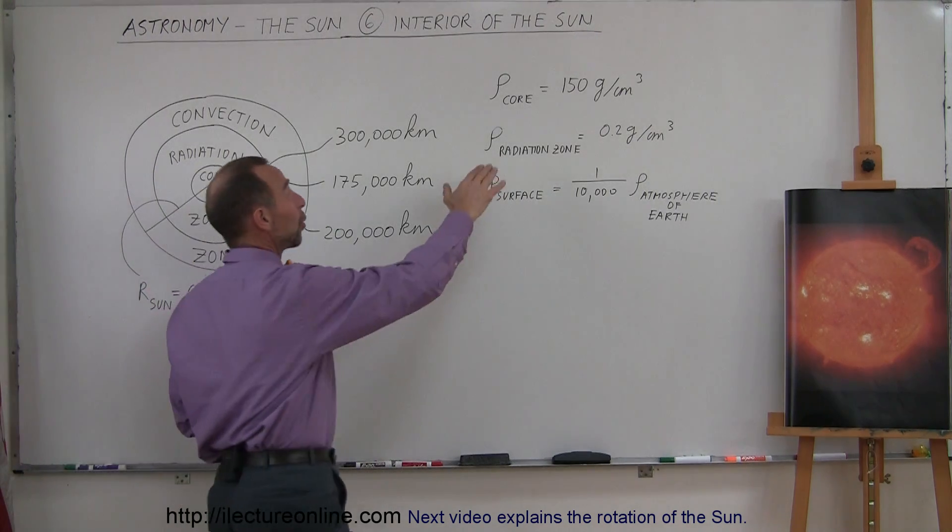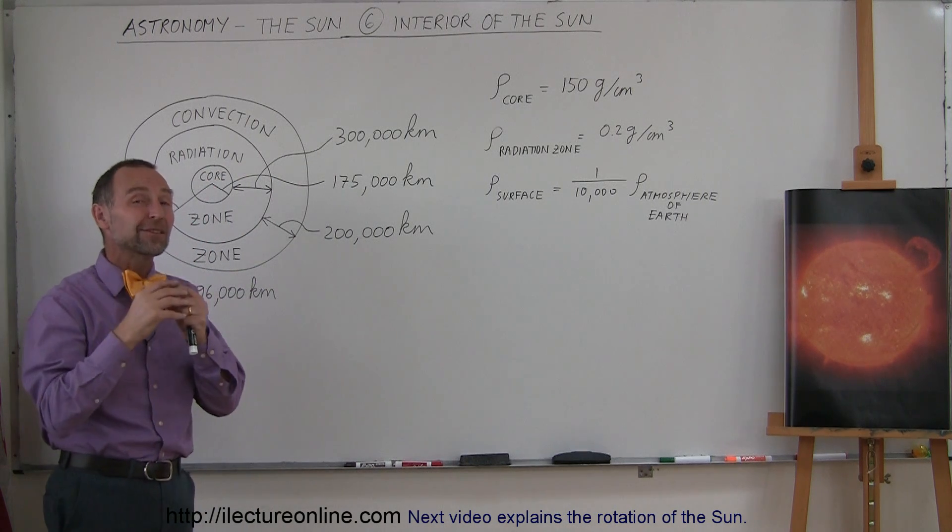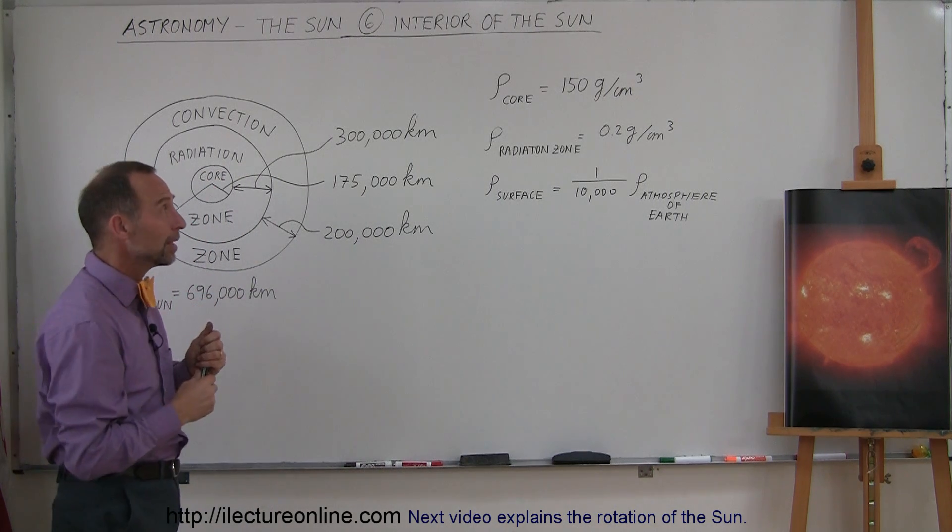Notice that the density of the core is about 150 grams per cubic centimeter, which is like 7 or 8 times the density of gold, and gold, of course, is really dense.